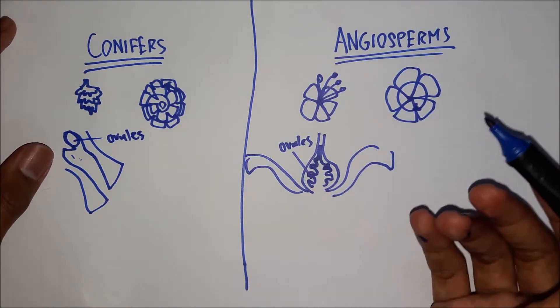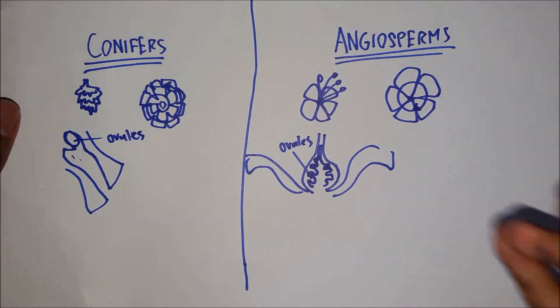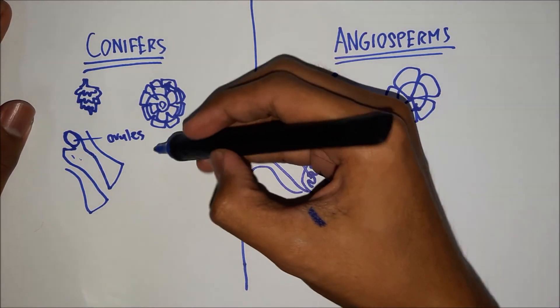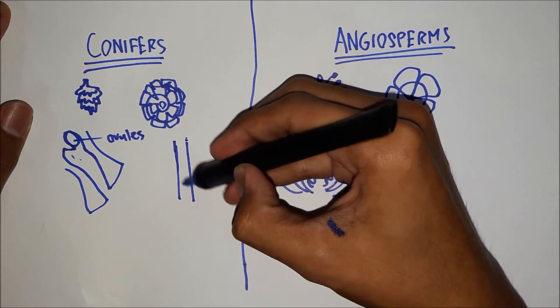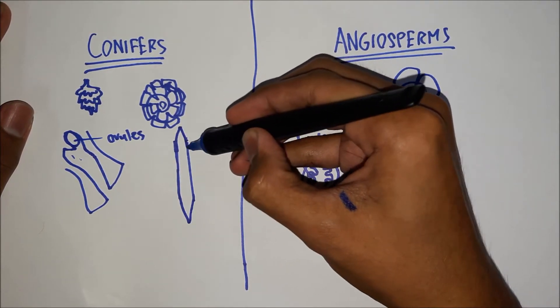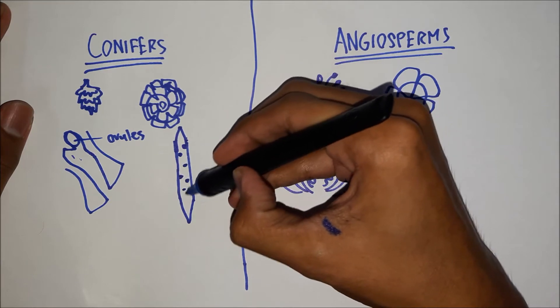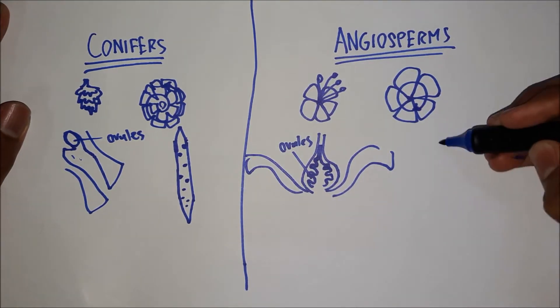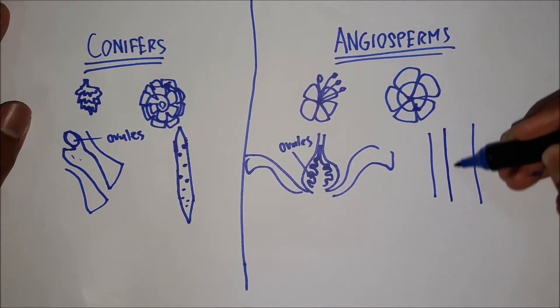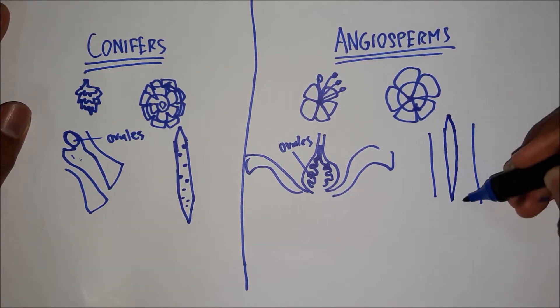Now, fourthly, in conifers, the xylem, the structure which transports water, only consists of tracheids. There's no vessel elements. While in flowering plants, they have the full set. They have the vessel elements and the tracheids.